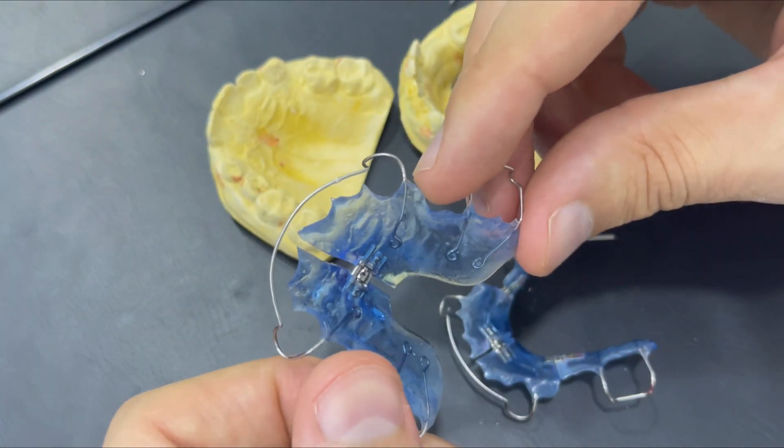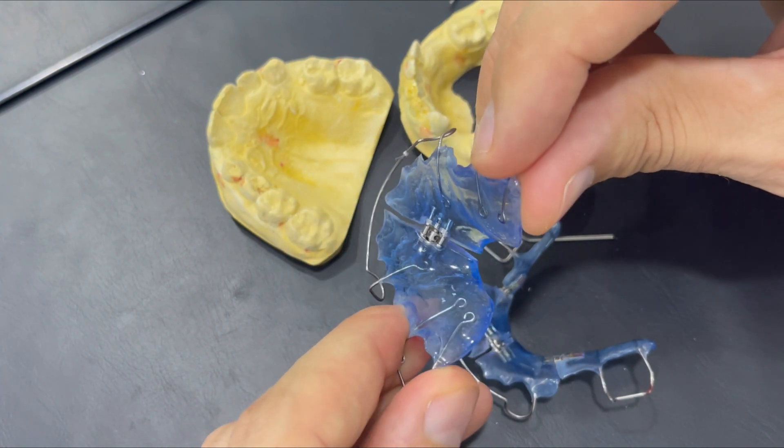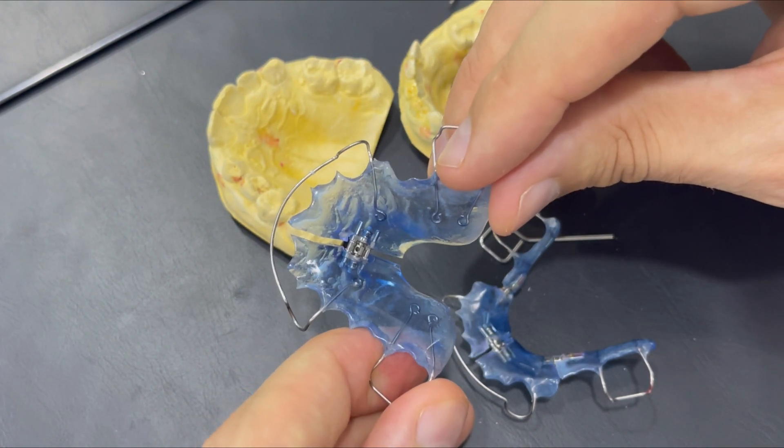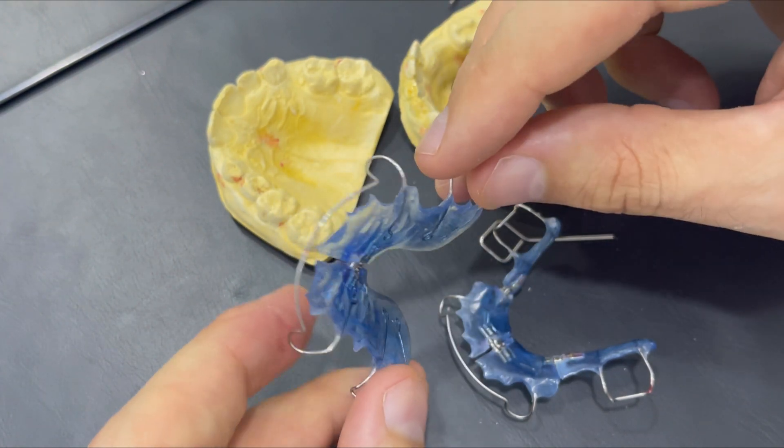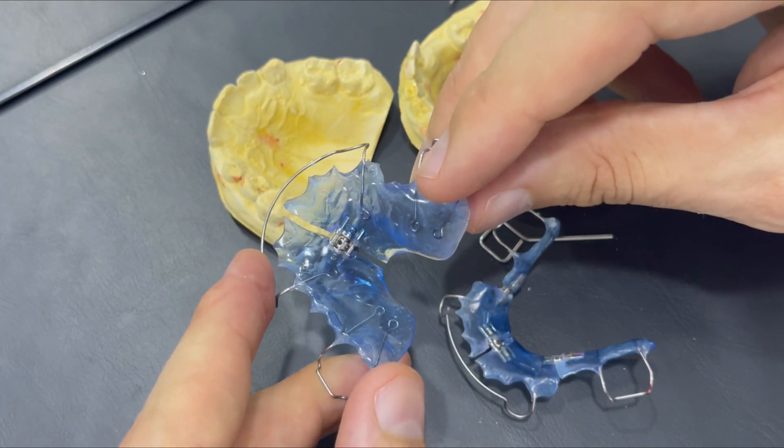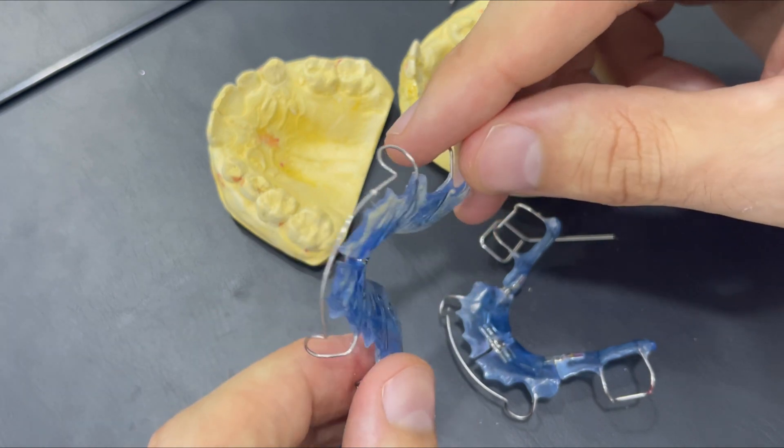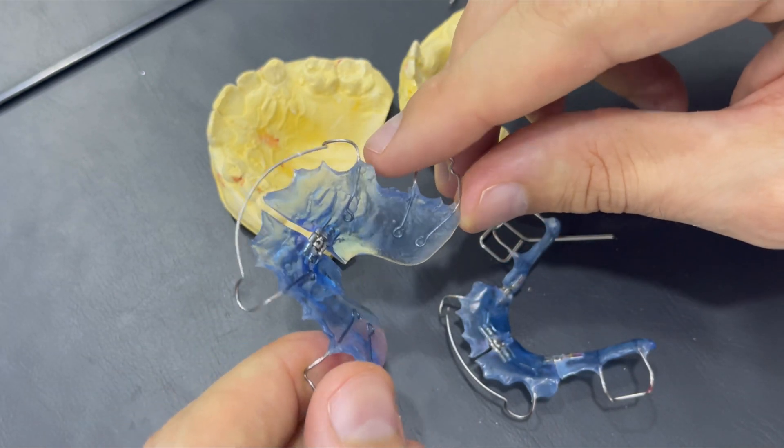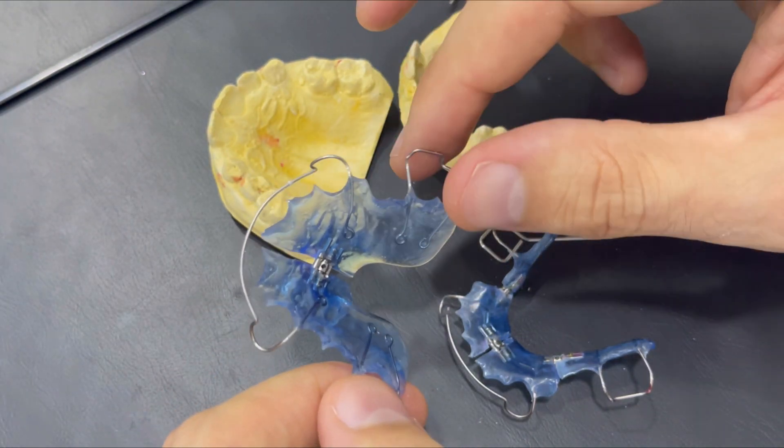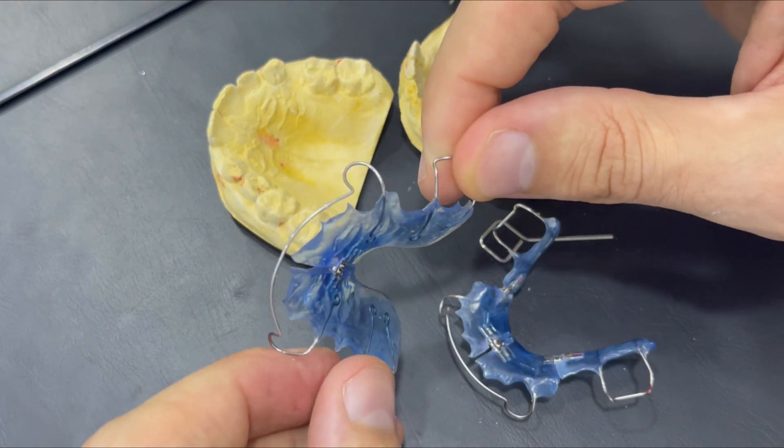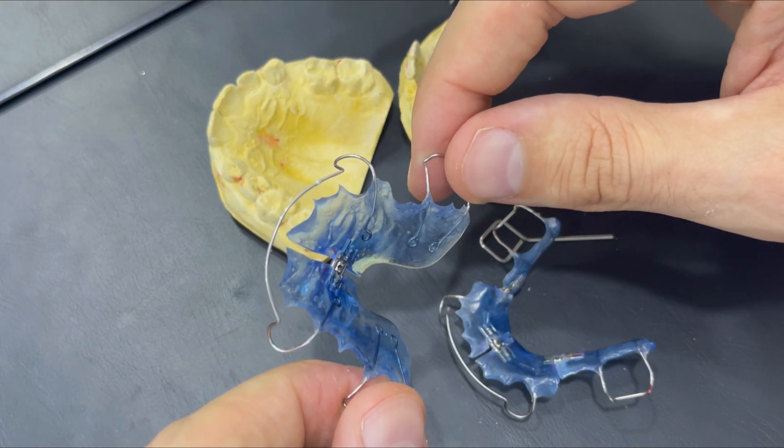Now the difference between the removable expansion and the fixed one: the removable one is more for dental expansion, and actually we prefer always the skeletal one. Skeletal expansion means the bone expansion. That means we are providing more space for the nasal airways.